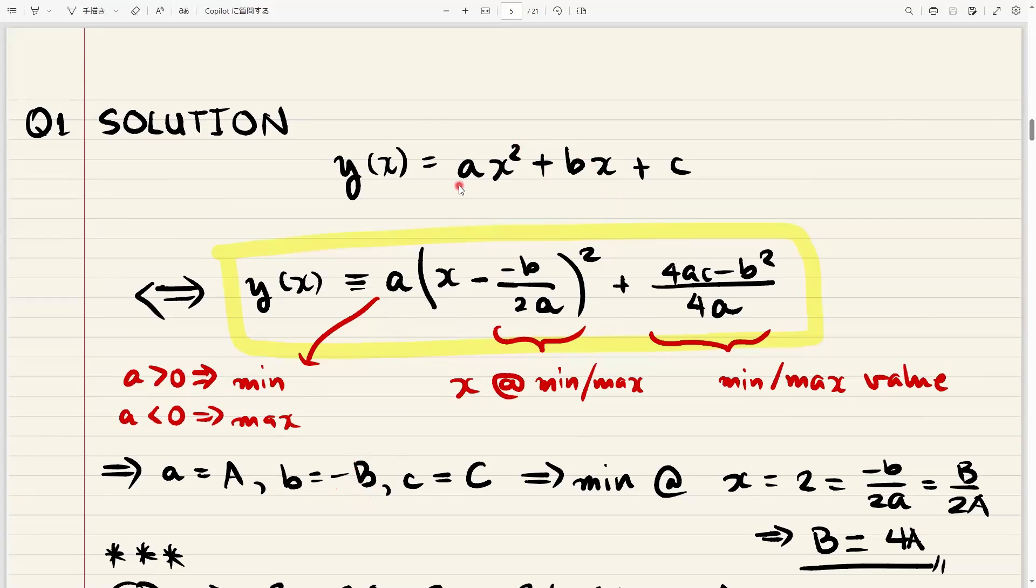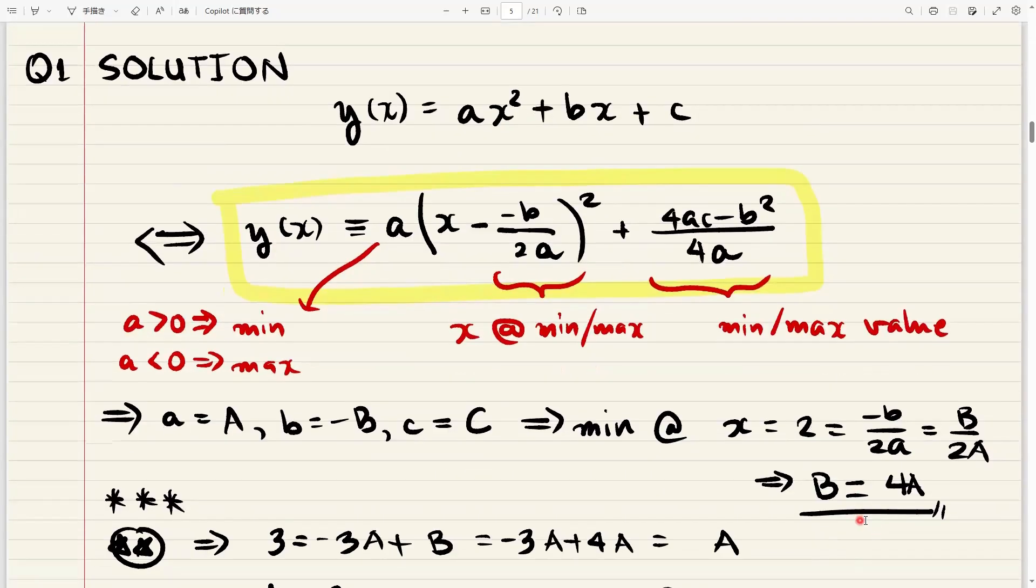For a, it's just the same as the given. And the lowercase c is just the same as the given. Now we just replace this lowercase b here with our minus B. And so we just get a B. And the a here, we just replace it with the uppercase A that we have. And we have this two, this is from the given, x equals two equals b over two a. And if we move a to the other side, we get this b equals four a. And this is our third equation.